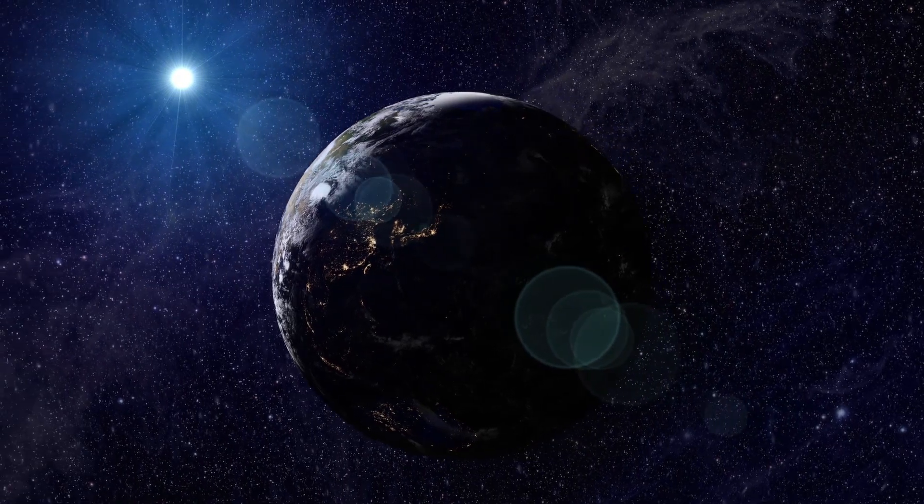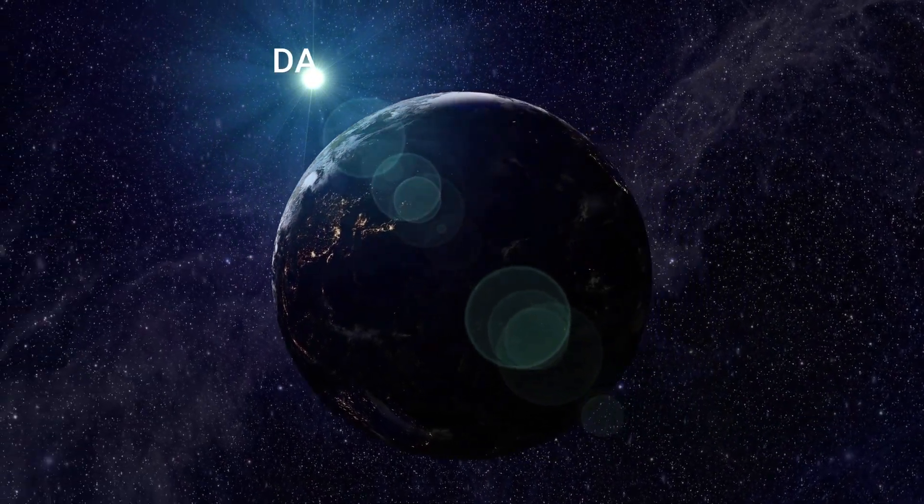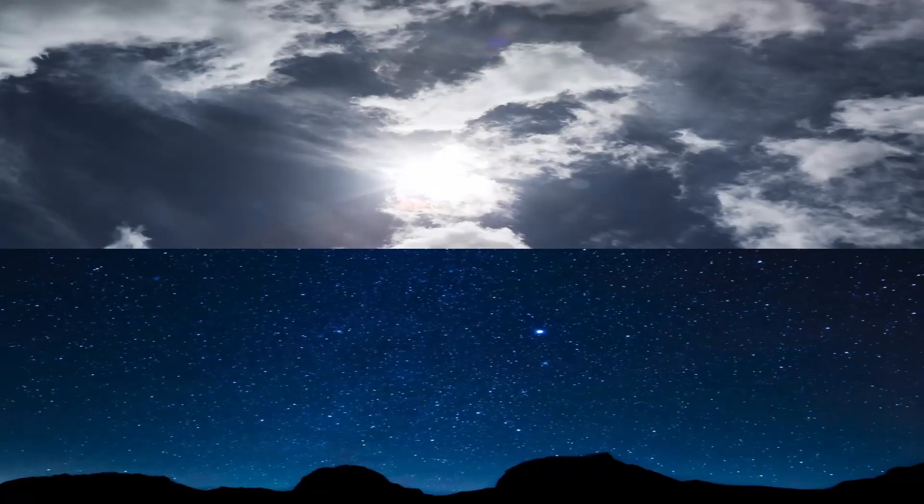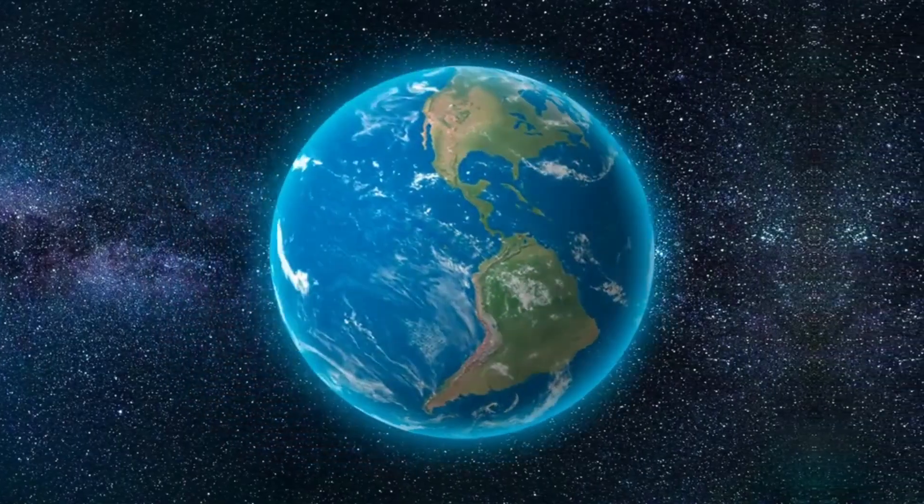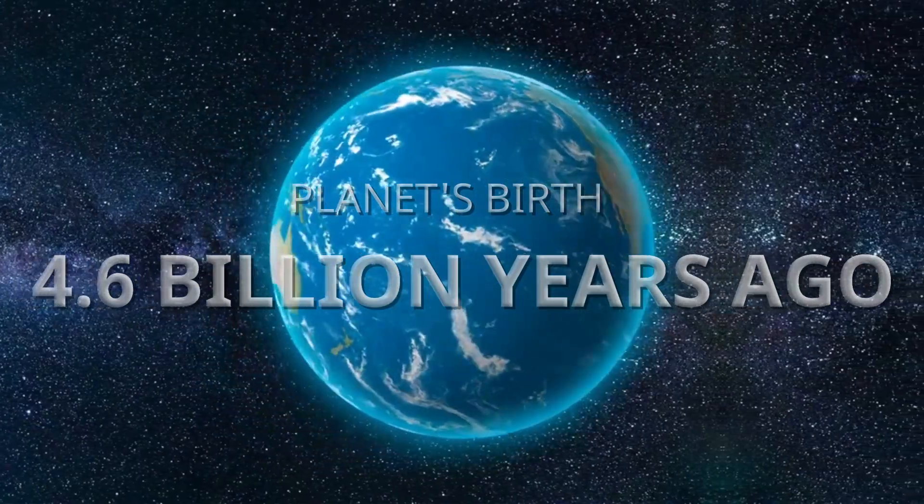The Earth revolves on its axis once every day, creating the day and night cycle. An essential feature of Earth's life, this rotation is a result of the planet's birth some 4.6 billion years ago.